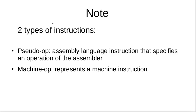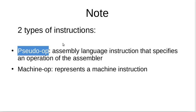Before we start, there is a simple note we need to follow. There are two types of instructions that the assembler deals with. One type is a pseudo-op — it is an instruction specified for the operation of the assembler itself; it is an assembly language instruction that specifies an operation the assembler needs to perform. Then we have the machine-op, which represents a machine instruction that needs to be translated by the assembler.